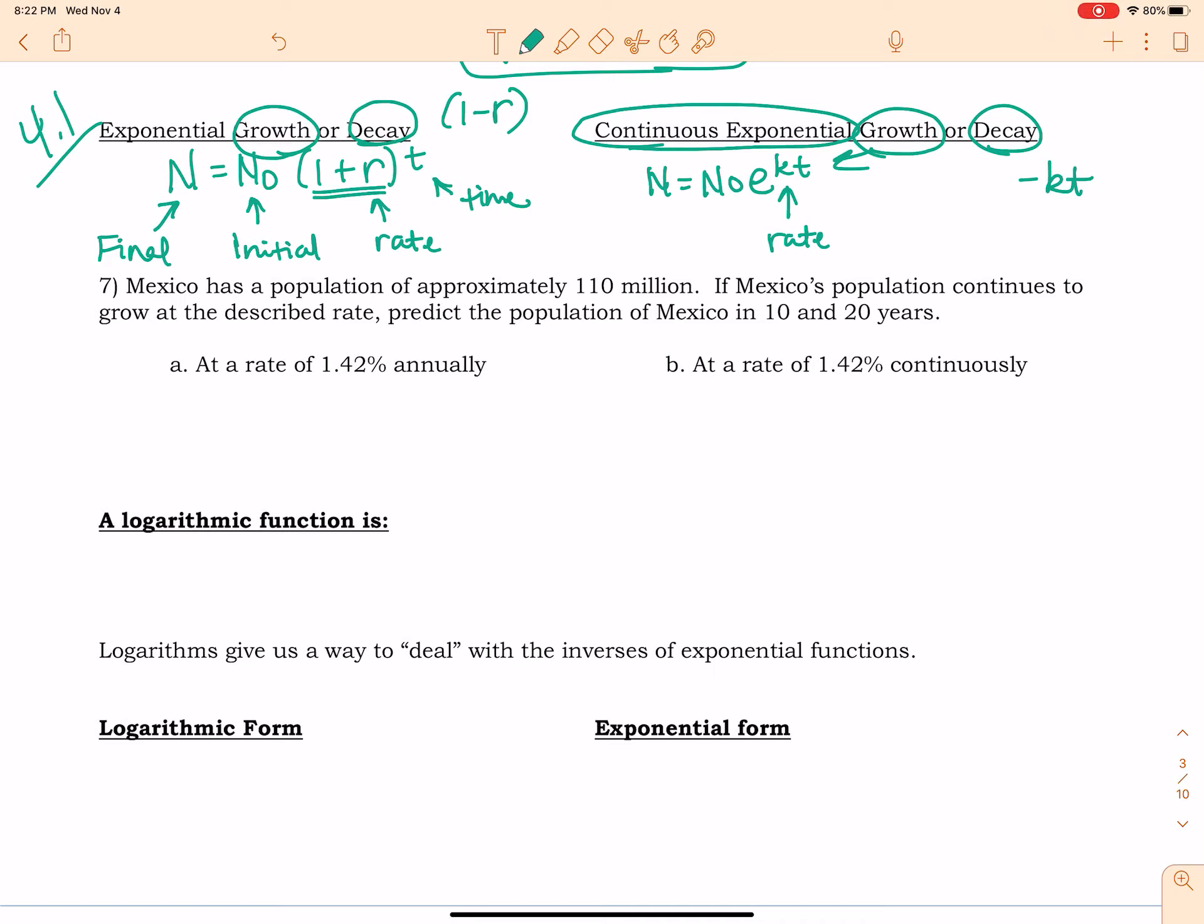Alright, so for problem number seven, we have a population of approximately 110 million. If Mexico's population continues to grow at the described rate, predict the population of Mexico in 10 and 20 years. Alright, so just to save a little bit of time, I'm just going to look at 10 years here.